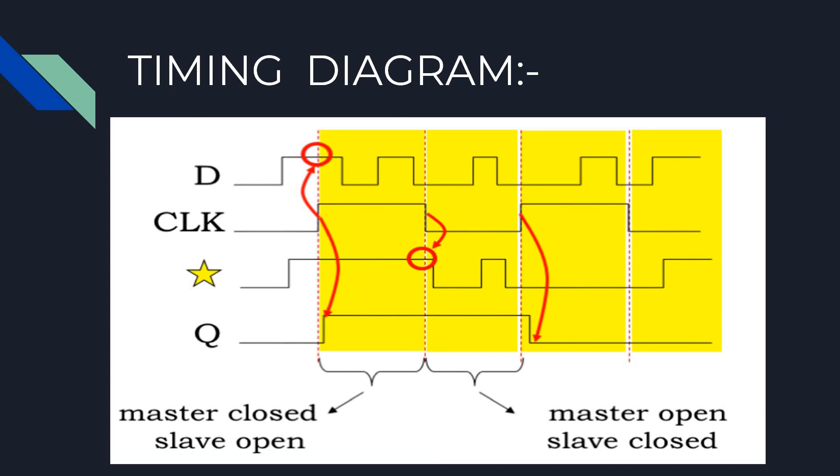The change in the Q output is triggered by the rising edge of the clock. Hence the name positive edge-triggered D register.